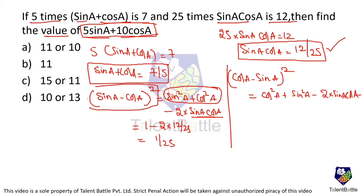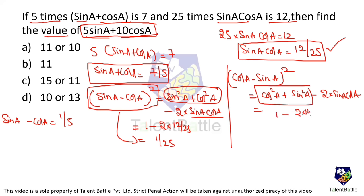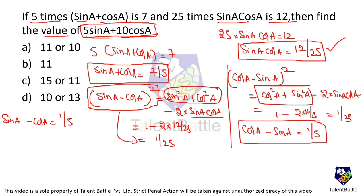So (sin a - cos a)² = 1/25, which means sin a - cos a = 1/5. Similarly, (cos a - sin a)² also equals 1/25, giving cos a - sin a = 1/5. Both expressions are effectively the same, so we'll get two possible answers.